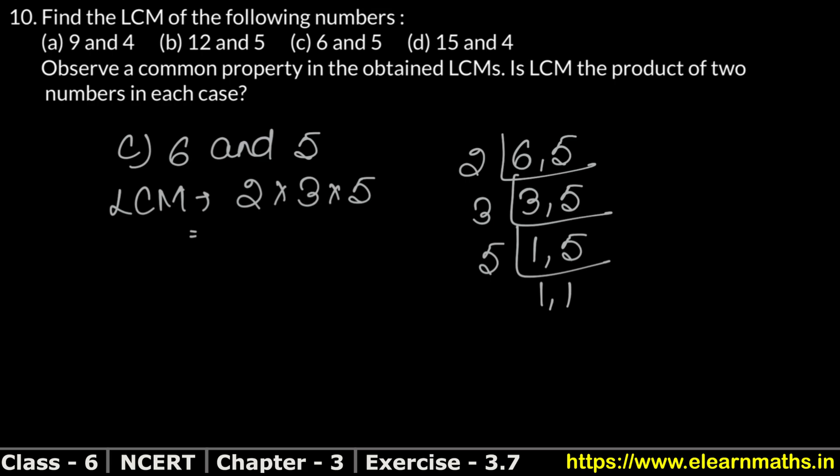2, 3 is 6. 6, 5 is 30. Right? So this is also the product of both these numbers.